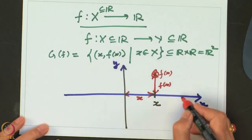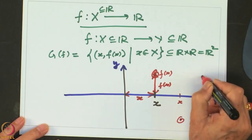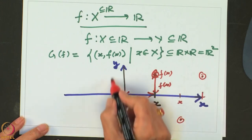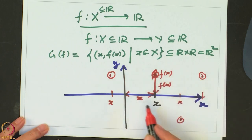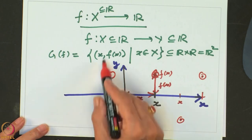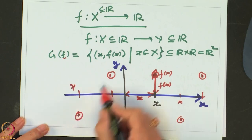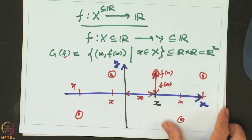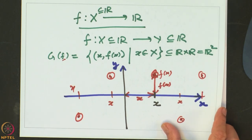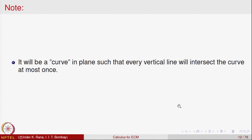So these points represent the graph of the function F. An observation: a graph normally gives you some kind of a curve in the plane, but every curve in the plane need not be the graph of a function. This is a subtle point we will see soon.